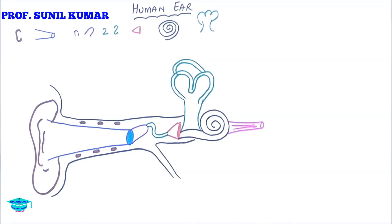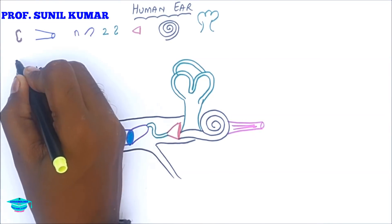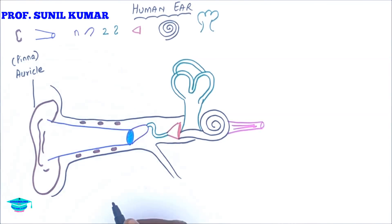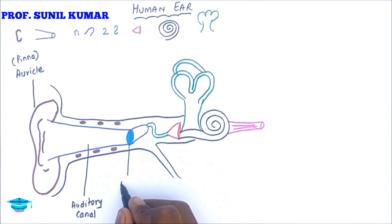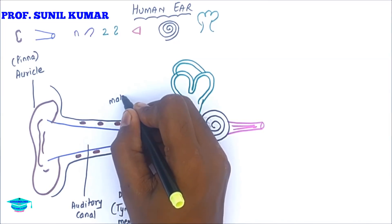Let's understand the labellings of the human ear. The first part is the pinna — the outer visible part of the ear — which helps in collection of sound. It can also be called the auricle. Next is the auditory canal, whose role is to transfer the air waves to the ear drum. The ear drum, when it vibrates, transfers sound in the form of impulses.